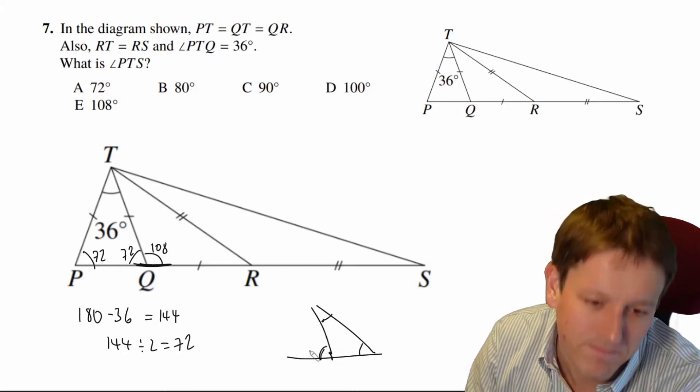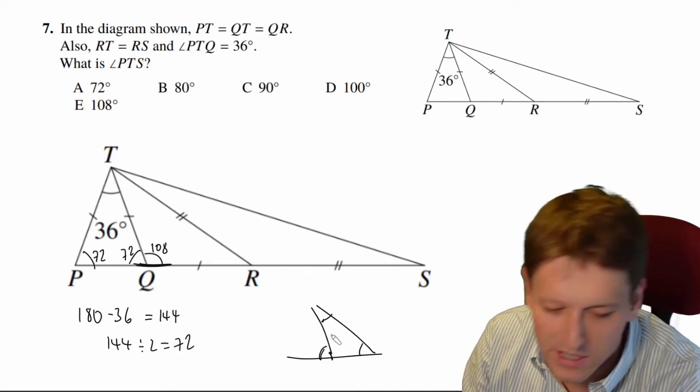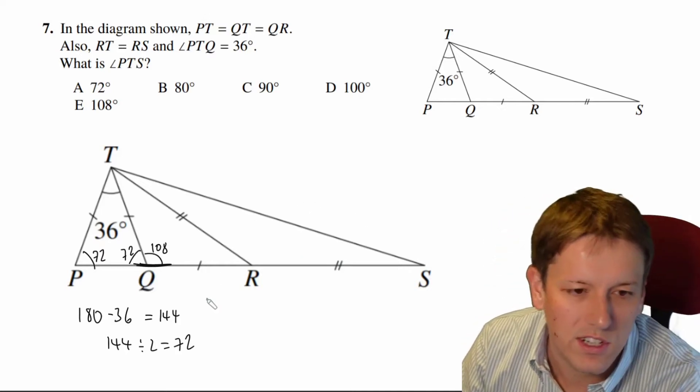Because angles in a straight line add up to 180, and also angles in a triangle there as well. Talk a lot more about all these things in the full course, Go for Gold in Maths Challenges.